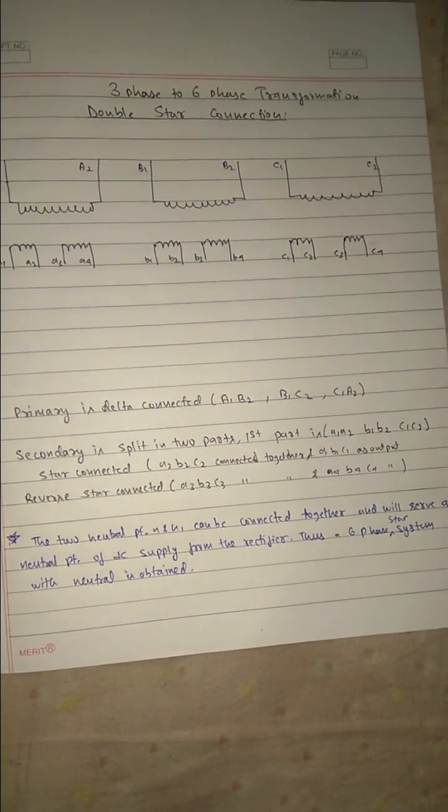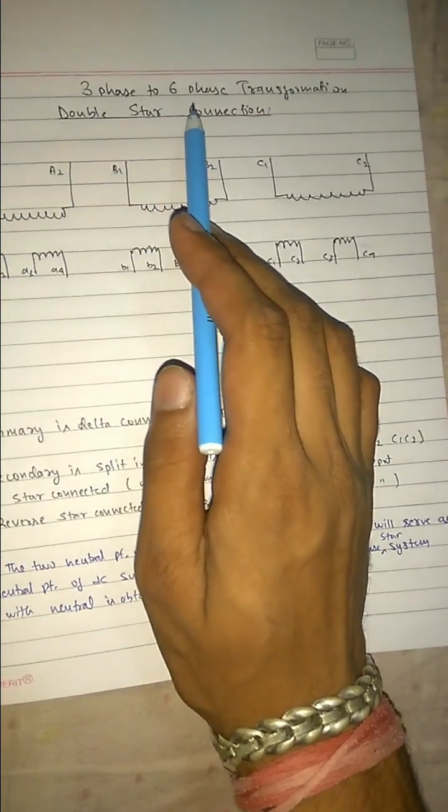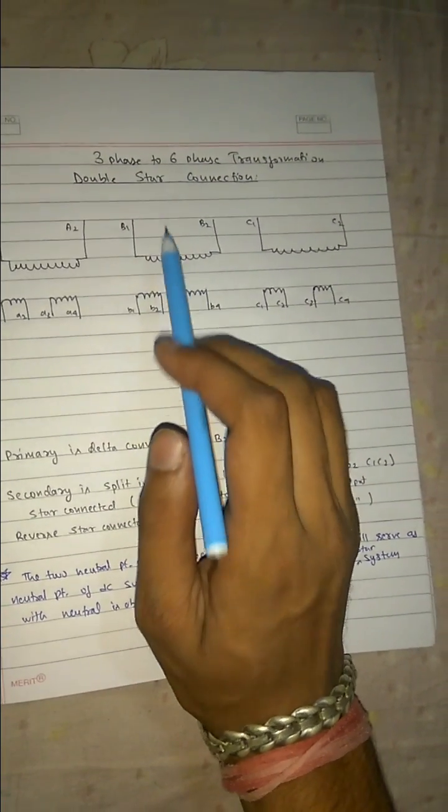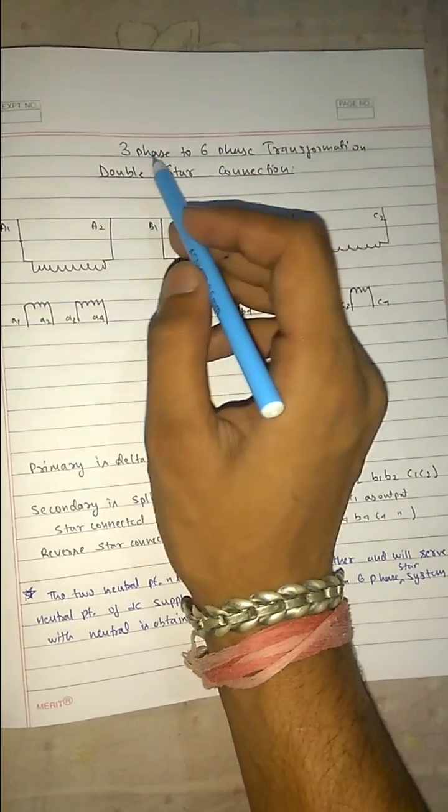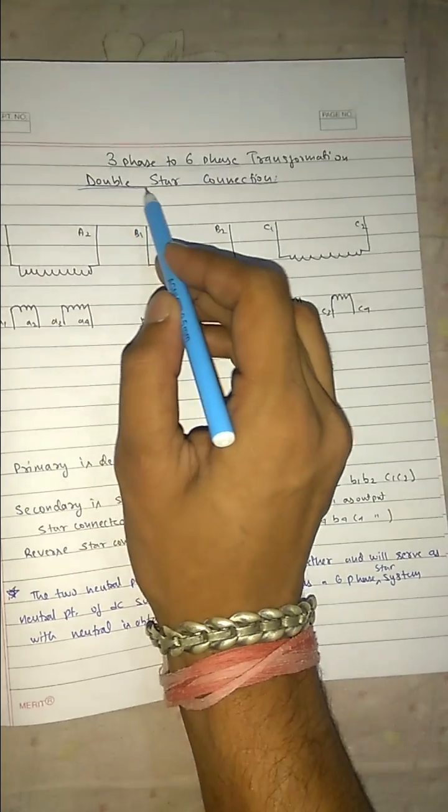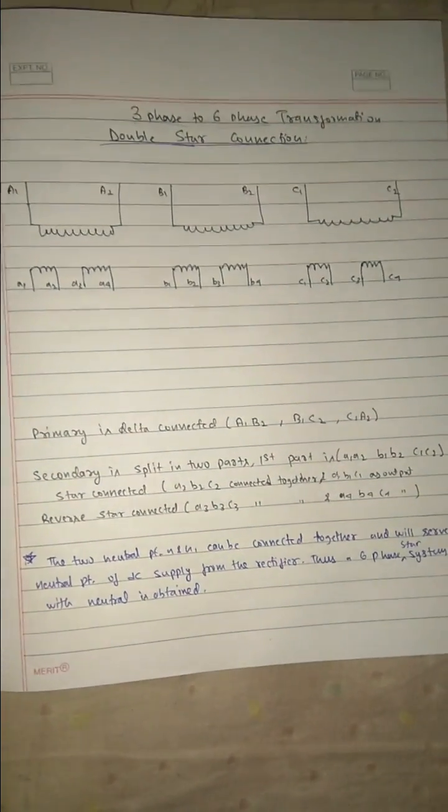3-phase to 6-phase transformation. Why do we do this 3-phase to 6-phase? Because for proper rectification, if there are more number of phases, the rectification is good. So the first thing we can do for 3-phase to 6-phase is by connecting it in a double star connection. What is the double star connection?